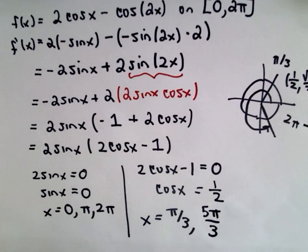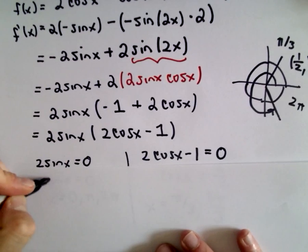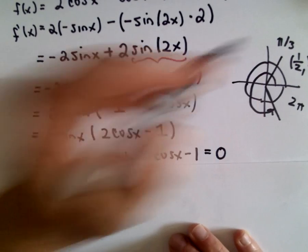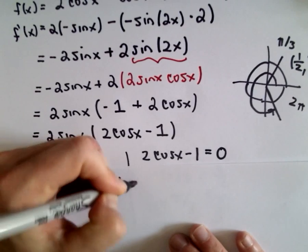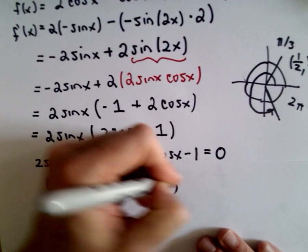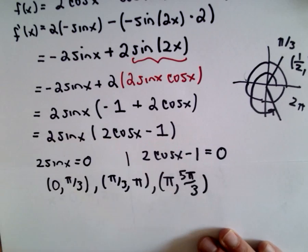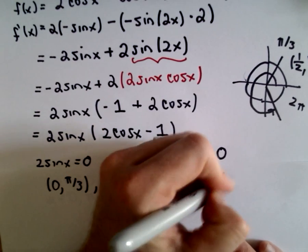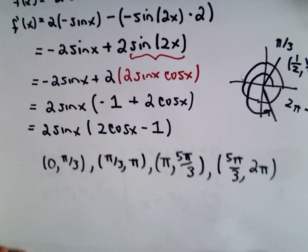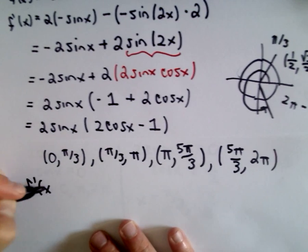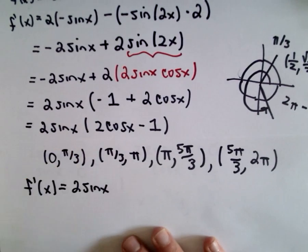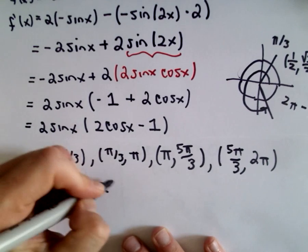At this point it's going to be a little bit tedious. We have to check a bunch of intervals: from 0 to pi over 3, from pi over 3 to pi, from pi up to 5 pi over 3, and then from 5 pi over 3 up to 2pi. So four intervals to check. All I have to do is take a point from each interval and put it into my derivative, and just determine whether that's going to be positive or negative.